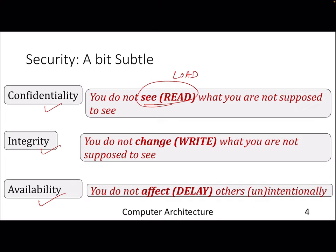If your address space doesn't permit you to see a particular address, you can't load it. Similarly, if you can't load it, you should not store or overwrite anything there. Finally, regarding shared resources used by multiple threads or cores, you should not — intentionally or unintentionally — affect others by hogging resources, causing other programs to suffer in terms of performance.